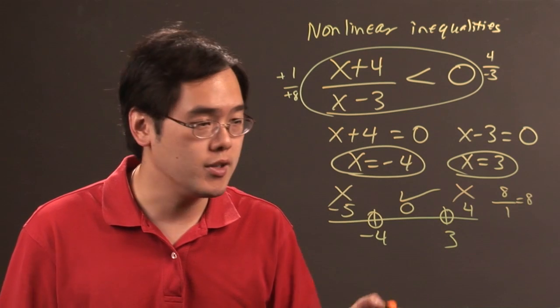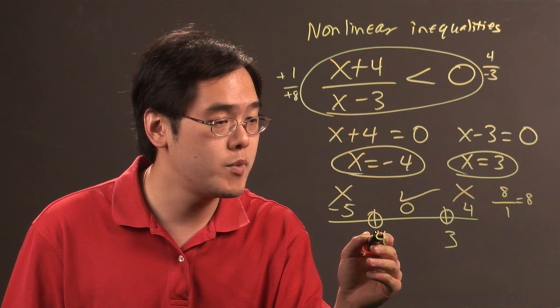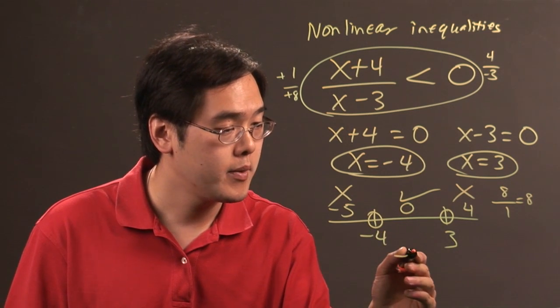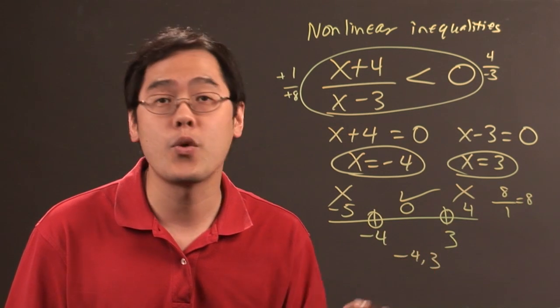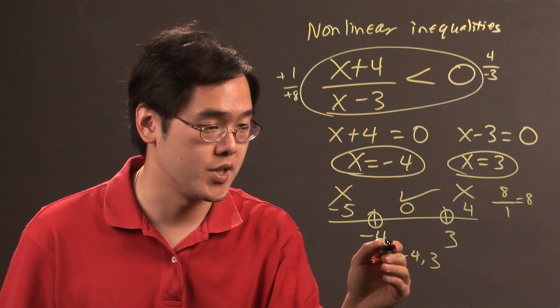Once you have your solution, write your answer in interval notation. Since we know the numbers between -4 and 3 work, we write (-4, 3). Because the numbers themselves are not included, you use the parentheses notation.